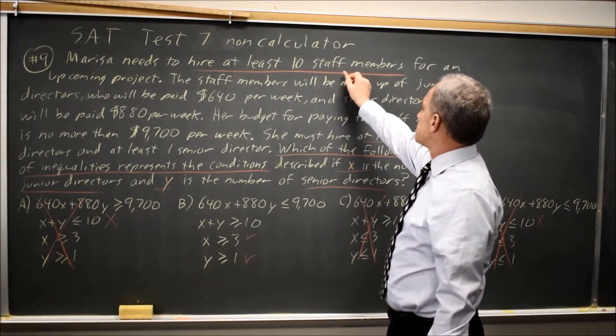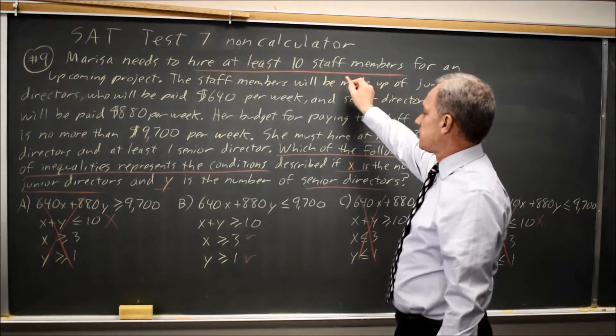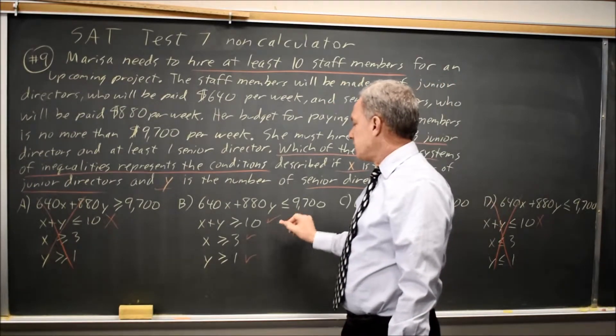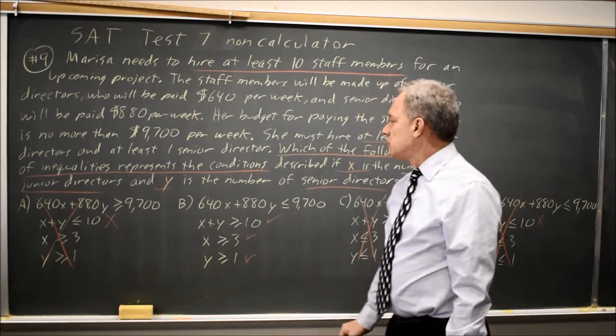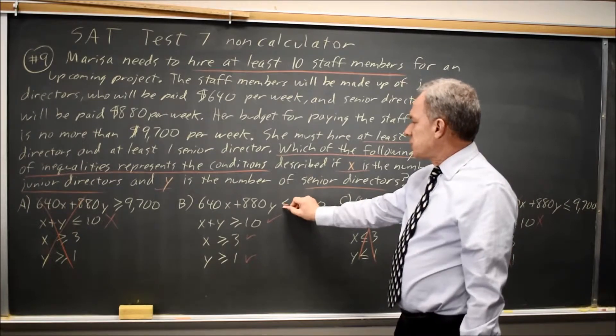Marissa needs to hire 10 staff members, at least 10 staff members. And this is at least 10 staff members. So I still haven't checked choice B.